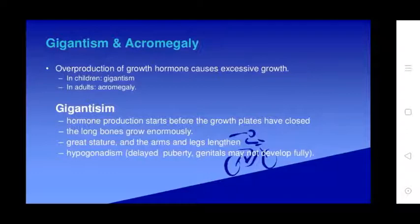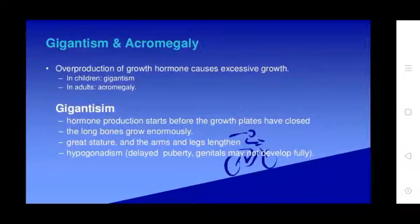Overproduction of growth hormone causes excessive growth in children (gigantism) and acromegaly in adults. In gigantism, hormone production starts before the growth plates close, causing the long bones to grow enormously, greatly increasing the size of the arms and legs. Associated features include hypogonadism and delayed puberty, with genitals that may not develop fully.